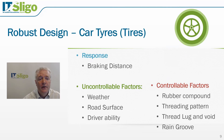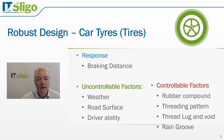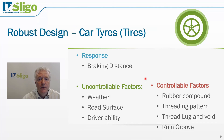Let's take the example of the tires on our car. The response is the braking distance — so that when we hit the brake pedal, our car will come to a predictable stop, irrespective of the conditions on the road. The uncontrollable factors when driving are the weather, the road surface, the driver ability, whether there's snow, whether there's ice, and so on. The controllable factors, on the other hand, are the rubber compound, the tread pattern, the tire lugs and voids, and the rain grooves.